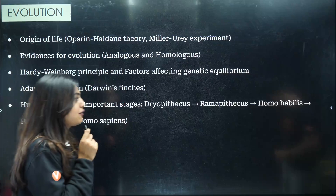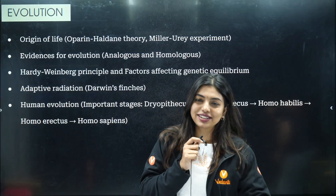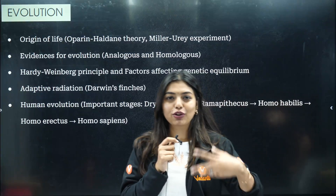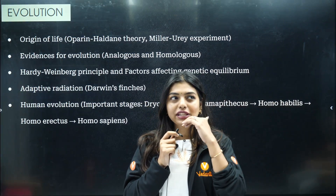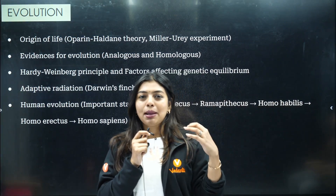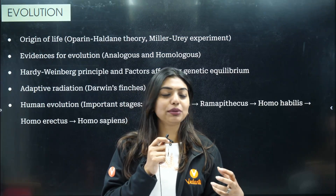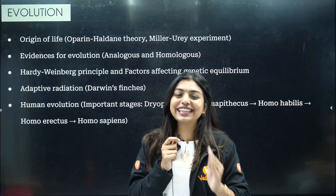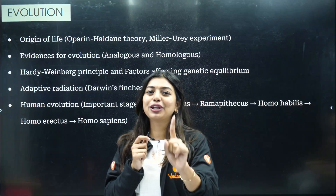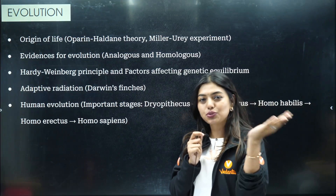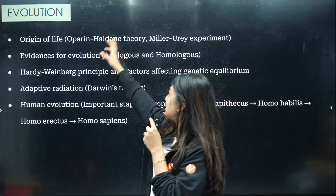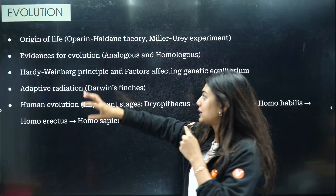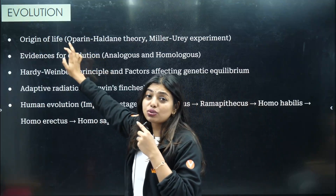Now, evolution. Sir and I noticed, whenever we were going through the papers to make the most repeated question set, it seems the board people have a connection with Oparin, Haldane, Miller and Urey. Because every year there is one question about what Oparin and Haldane told, and the experiment done by Miller and Urey. You can check — every paper has it. So please do not forget this.